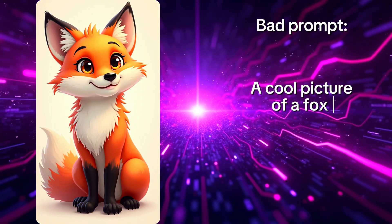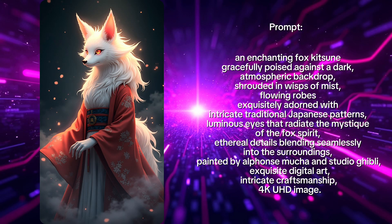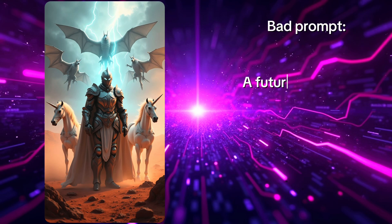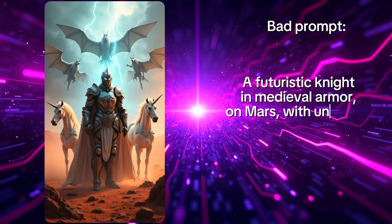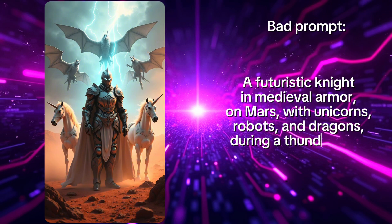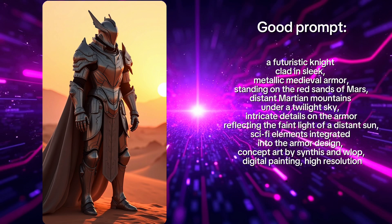Avoid common mistakes. First, being too vague — bad prompt: 'A cool picture'; result: a random generic image. Fix it by adding details about the subject, setting, and style. Second, overloading your prompt — bad prompt: 'A futuristic knight in medieval armor on Mars with unicorns, robots, and dragons during a thunderstorm'; result: a chaotic mess. Fix it by focusing on one idea at a time and splitting complex ideas into multiple prompts.